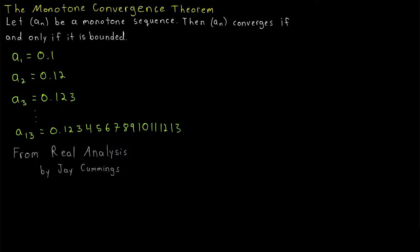One of the powerful things about the monotone convergence theorem is it gives us a way to prove that a sequence converges without even knowing the limit. If a sequence is monotone and bounded, then it converges. At no point do we need to identify the limit.